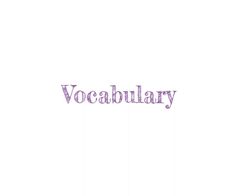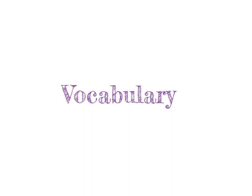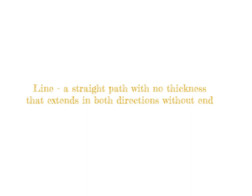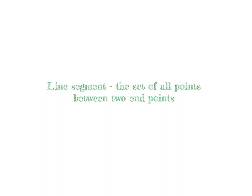First, there are some vocabulary words I want to go over with you guys. Our first vocabulary word is point, and a point is a precise location in a plane. Our next vocabulary word is line, and a line is a straight path with no thickness that extends in both directions without end. Next, we have line segment, and a line segment is the set of all points between two endpoints.